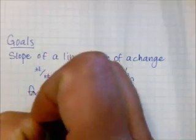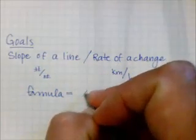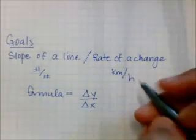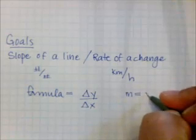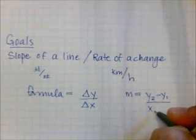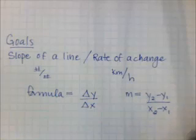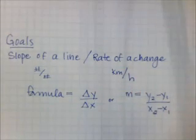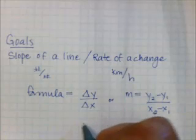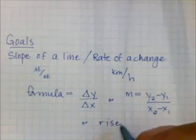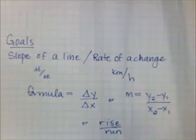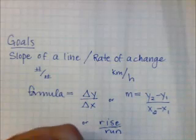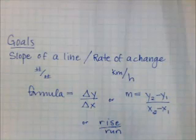We're going to use this formula to identify the slope or rate of change: the change in Y over the change in X. Sometimes you'll see it written as M equals y2 minus y1 divided by x2 minus x1. Some people also simplify it as rise over run, and you'll hear me talk like that sometimes too.